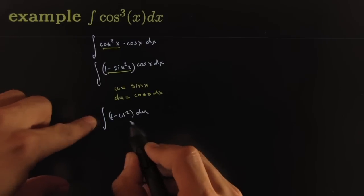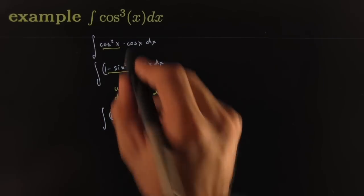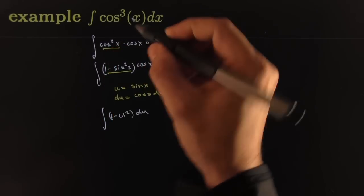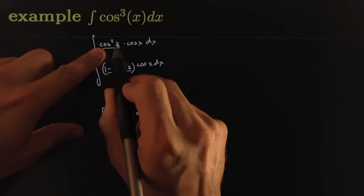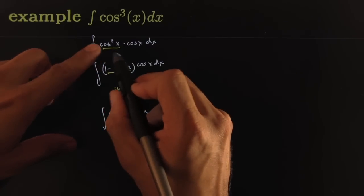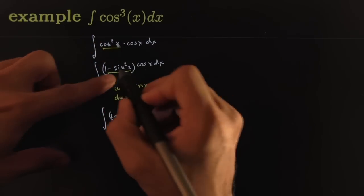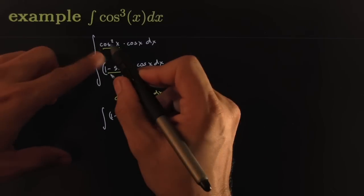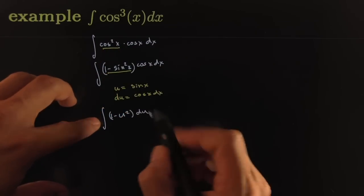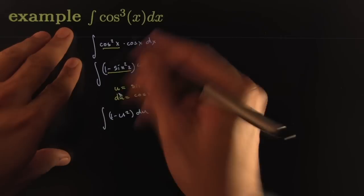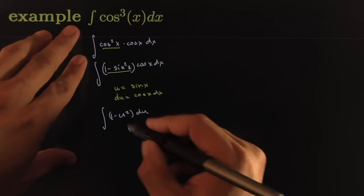So it turns out, every time you've got an odd number of these, you can always play that game. Save one of them on the side here and turn the even number of them into sines or cosines, depending on what it is. If it's cosine, you turn into sine squares. If it was sine, you would turn into cosine squares. And this would be your u, and everything would work out nicely. This is not the only one you can solve using this idea - there's a large family of them that you can use this idea on.